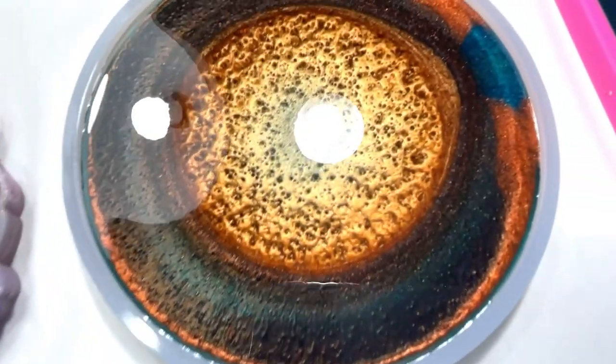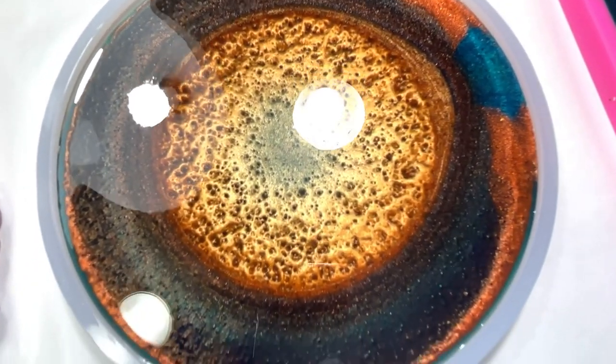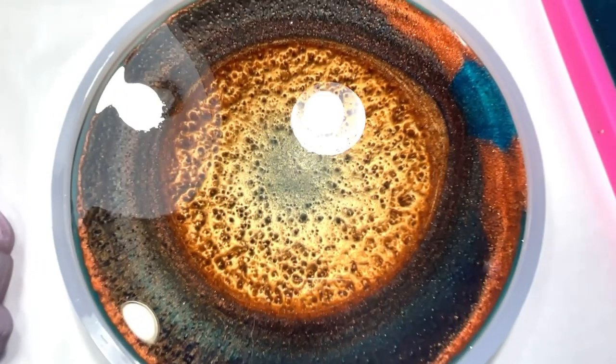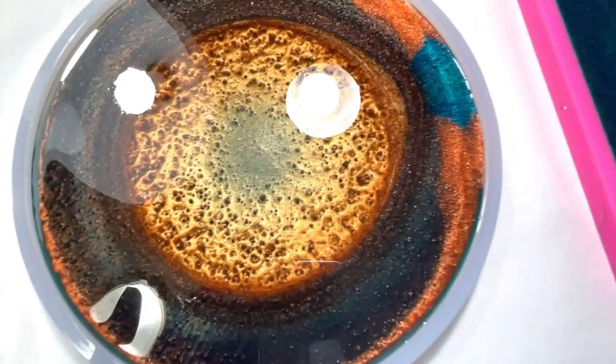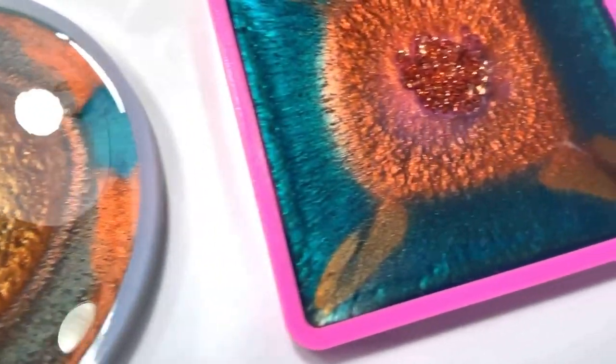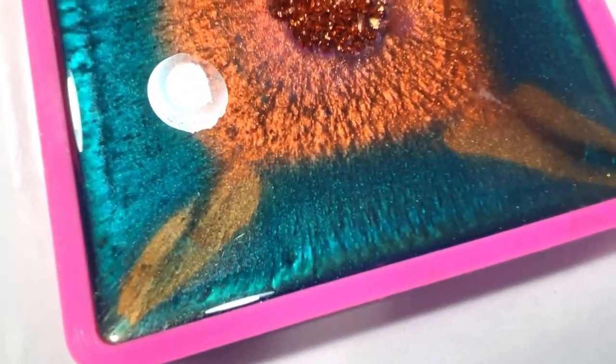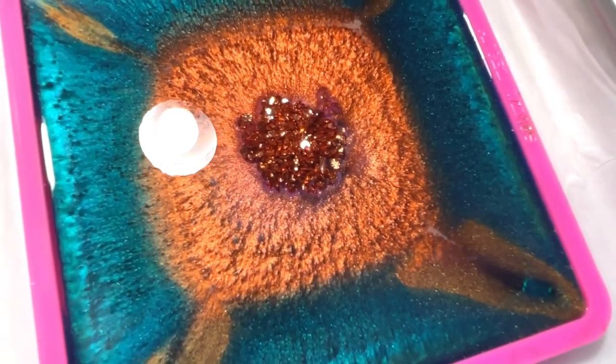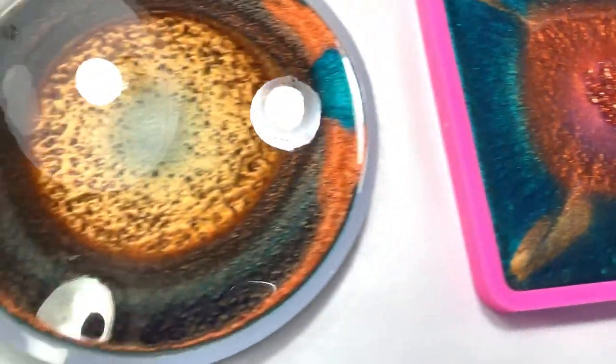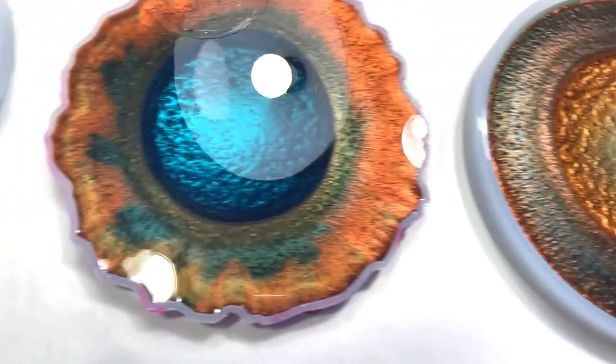It almost looks like an orange rind on the sides there. This one, you can't really see a lot of the turquoise in this one, mostly the copper on this side. So I wonder if this one's going to have more turquoise on the other side. Very neat with the square. All right guys, I will see you tomorrow to get these out of the molds.